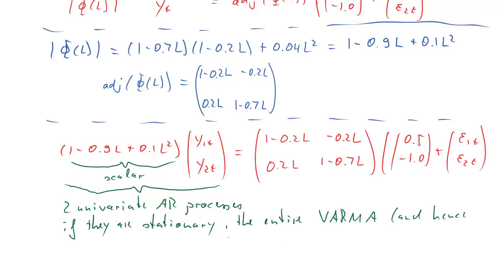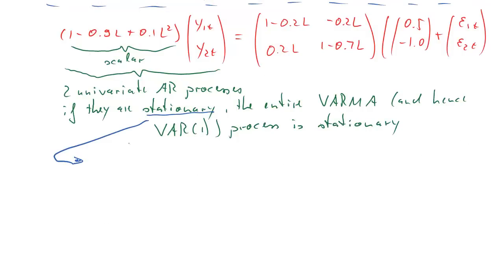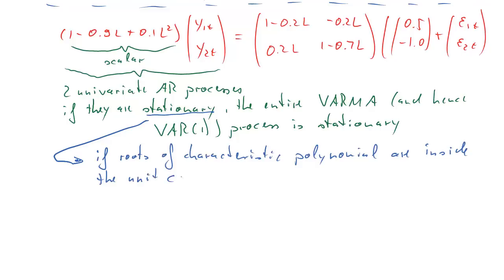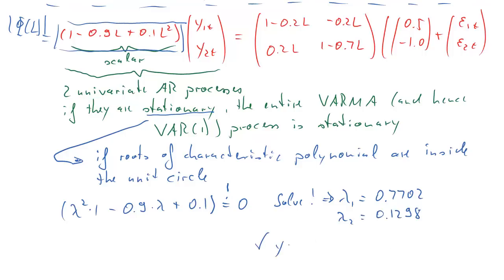In the univariate case we knew that if the AR part is stationary then the entire ARMA process is stationary, and that is valid here as well. We need to look at the roots of the characteristic polynomial — they ought to be inside the unit circle. We replace the L's with lambda's with inverse powers, set that to zero, and solve the characteristic equation. Doing so gives solutions for lambda of 0.7702 and 0.1298. Both are inside the unit circle, so we indeed have a stationary process.